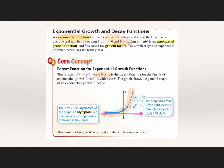Our favorite domain and range: the domain of our graph is all real numbers, so we can plug in whatever number we want for x. But for y, it is greater than 0. It's always going to be above whatever your asymptote is, because you get really close to it but don't touch it and don't cross it. So our range is y is greater than 0.